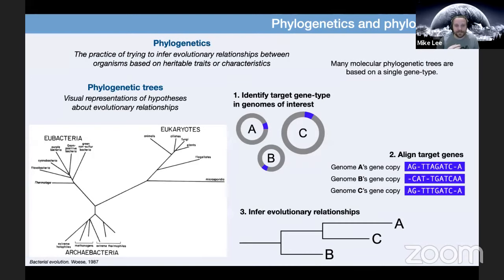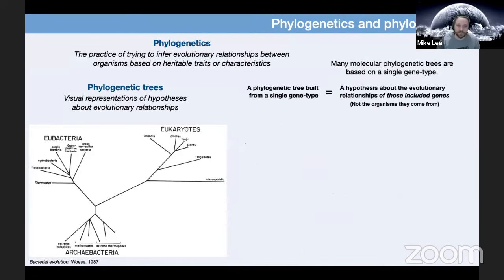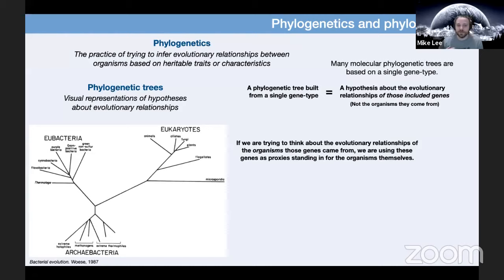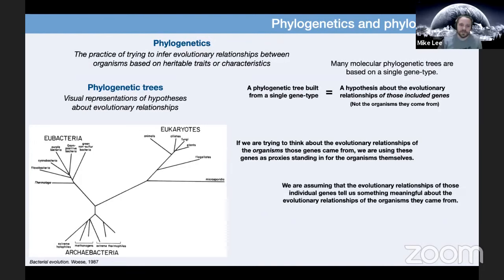Let's think about what it means to make a tree from a single gene type. When we generate a phylogenetic tree of a single gene, what we're doing is creating a hypothesis about the evolutionary relationships of those included genes — not the organisms they come from. This means if we are trying to think about the evolutionary relationships of the organisms those genes came from, we're using these genes as proxies, assuming that the evolutionary relationships of those genes tells us something meaningful about the relationships of the organisms.